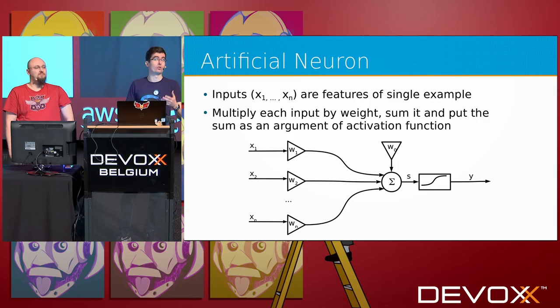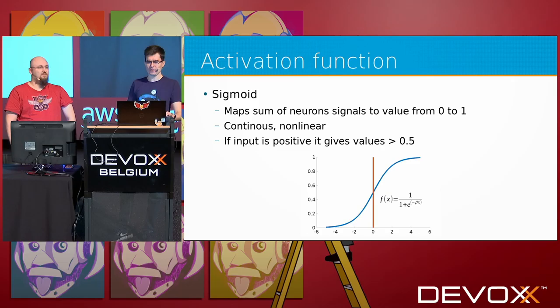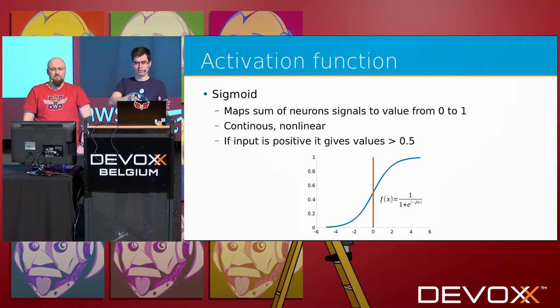A typical activation function is called sigmoid — it's continuous and non-linear. These features are useful because we need derivatives of this function later. It simply maps the sum to a value between 0 and 1, as you can see in the picture.